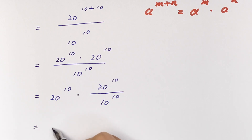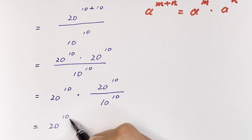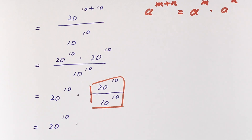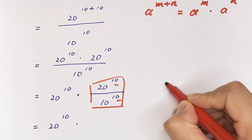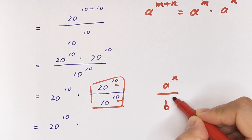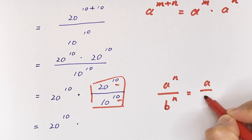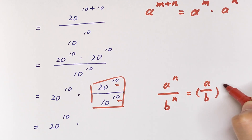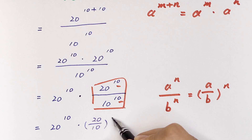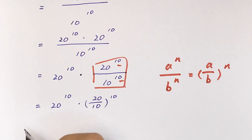This is equal to 20 to the power of 10 times — for the remaining part with the same power — we apply the formula that a to the power of n over b to the power of n is equal to a over b, in brackets, to the power of n. So here it becomes 20 over 10, in brackets, to the power of 10.